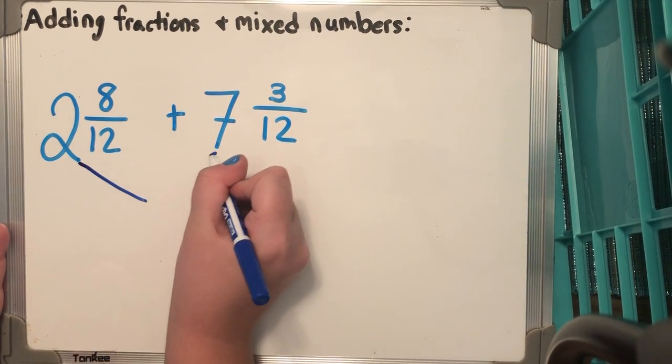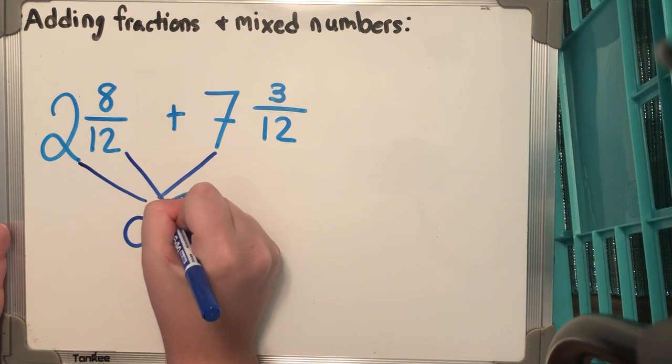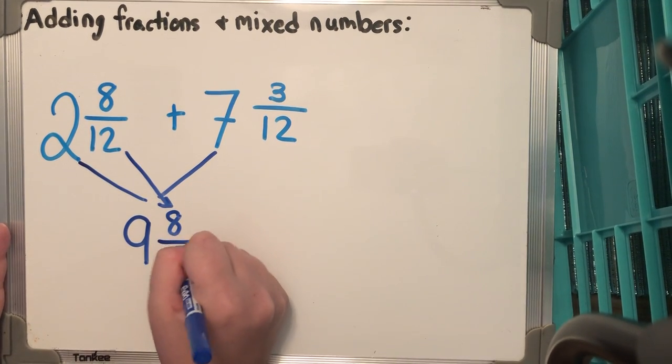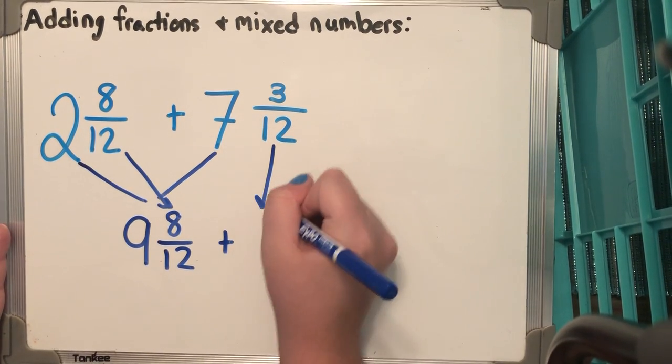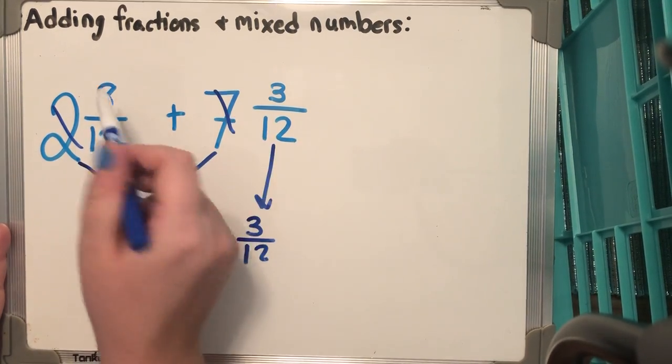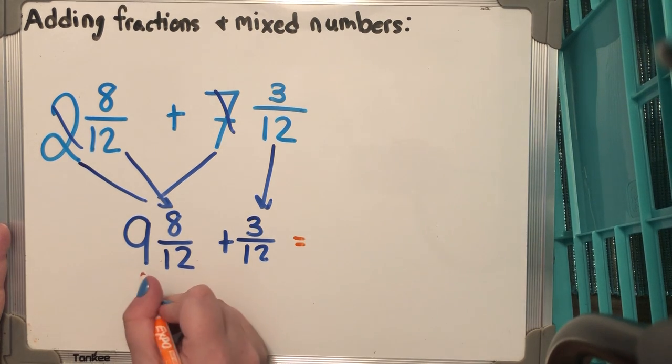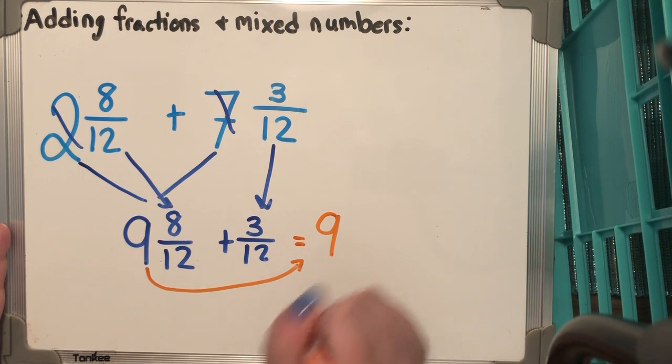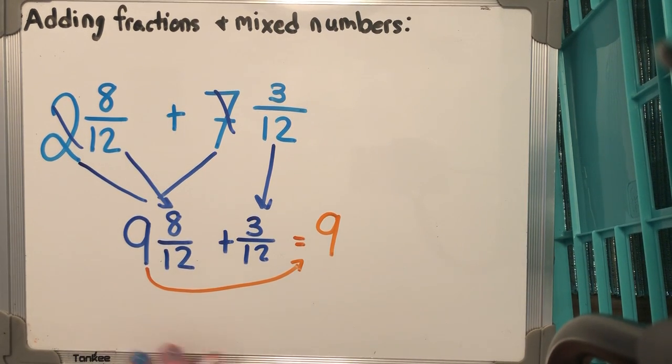So I got 2 8/12 + 7 3/12. Remember, when we start, we're going to add our whole numbers, and you're going to get 9. Then I'm going to take this 8/12 and I'm going to bring it down and make 9 8/12. I'm going to bring down this 3/12. And of course, you can cross out like we did in the classroom. And now I can go ahead and solve. This 9, I'm going to bring across over here because there's no other whole number. Remember, there's like an imaginary 0 in front of that 3/12. So this 9 gets brought over.